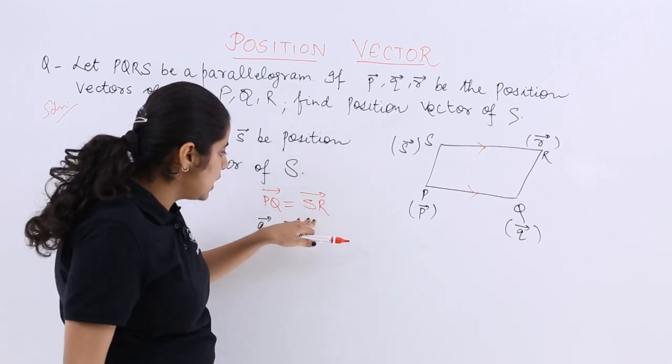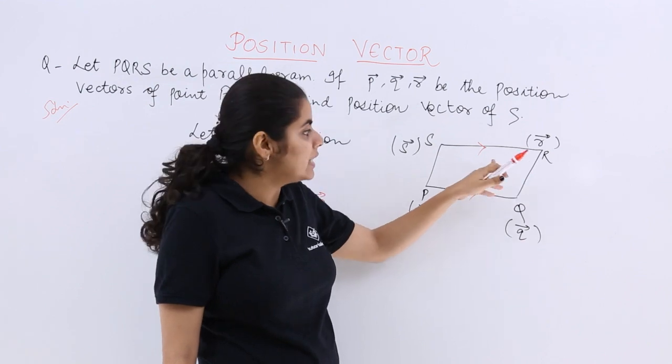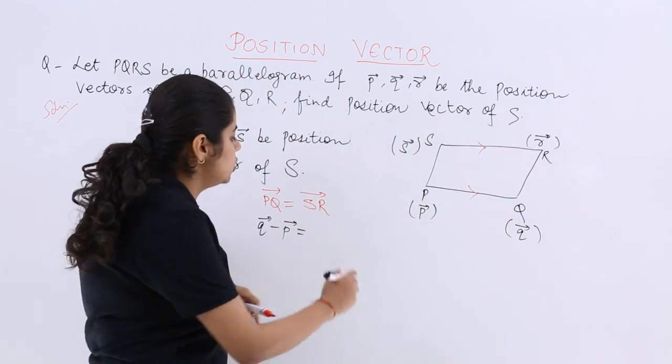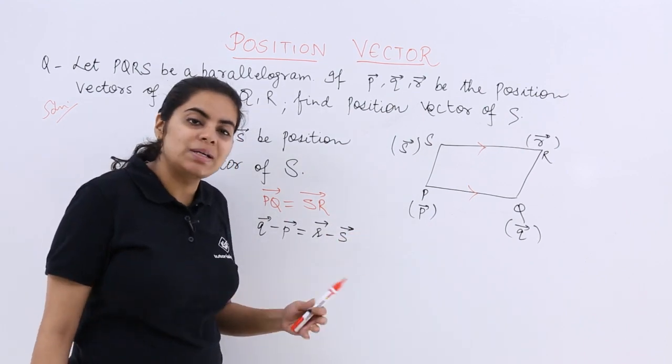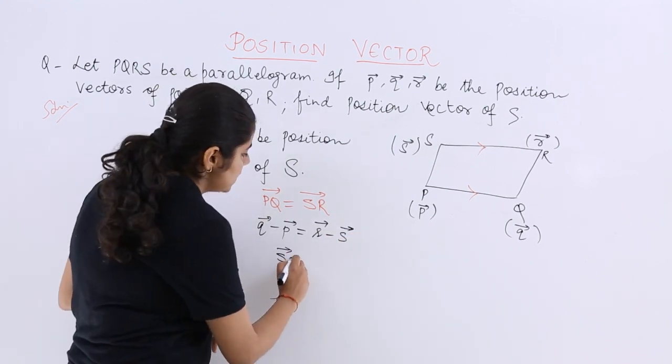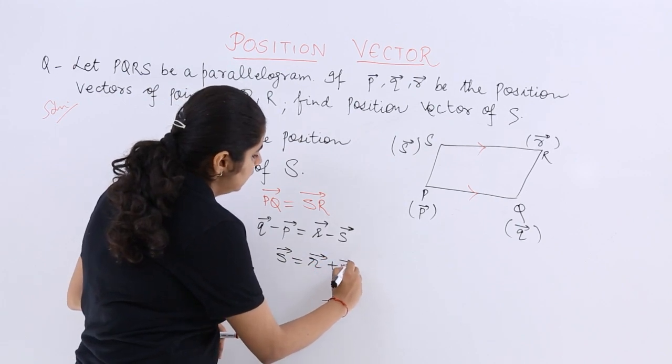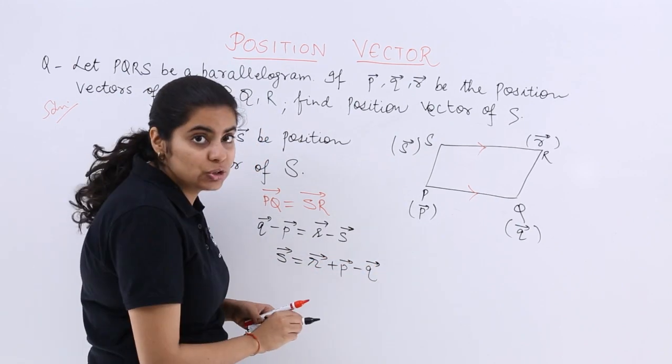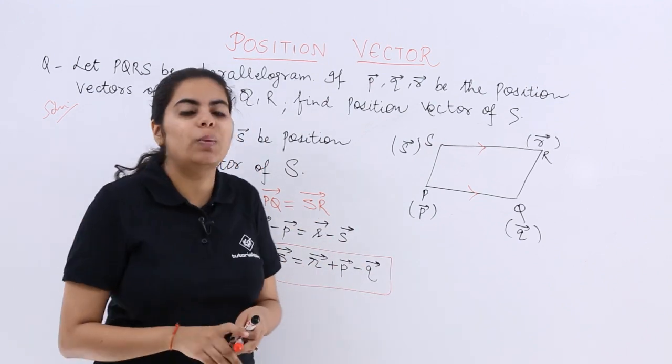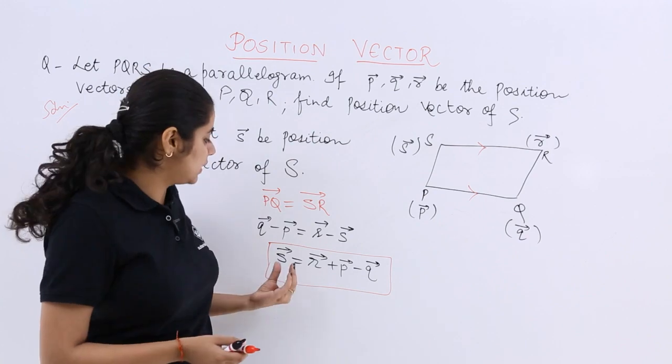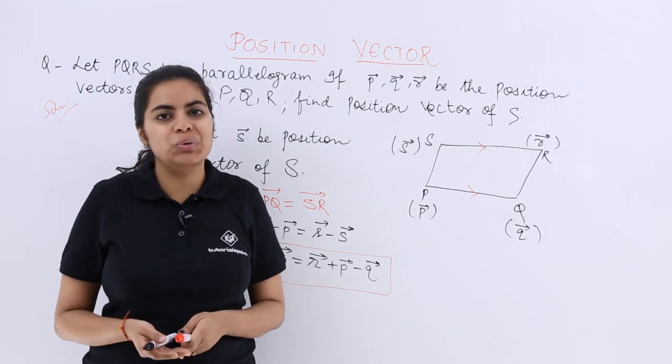Similarly, SR equals r minus s. Since PQ equals SR, we have q minus p equals r minus s. Solving for s, we get s equals r plus p minus q. This is the position vector of S.